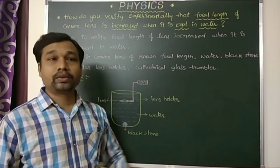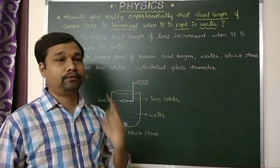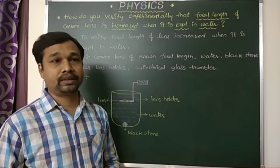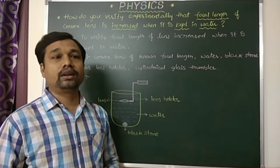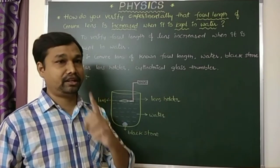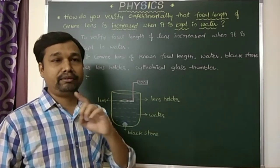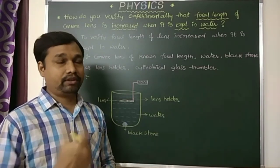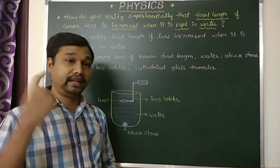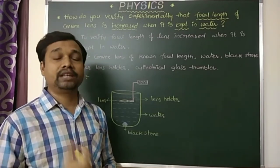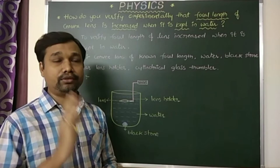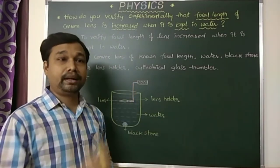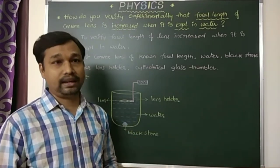Suppose if you consider an object placed between the focus and the optic center — if the object is placed in front of a convex lens between the focus and the optic center, where will we get the image? If the object is placed at the focus, we get the image at infinity. If the object is placed between the focus and optic center, we will get the image behind — on the same side of the lens.